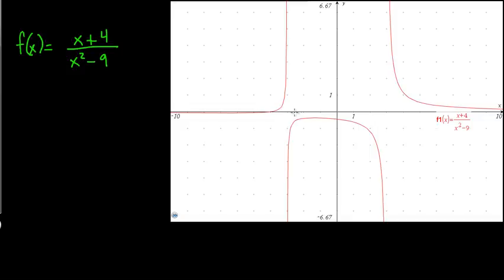and then you'd put your little union, and then you'd say negative 3 to 3, and then you've got your asymptotes and your jump, and then you'd put another union, and you'd say 3 to positive infinity.